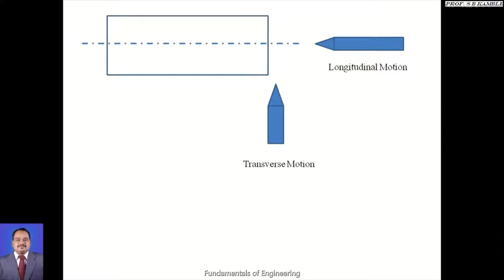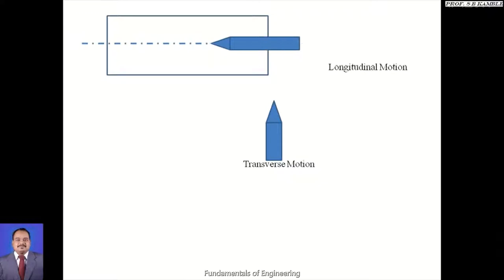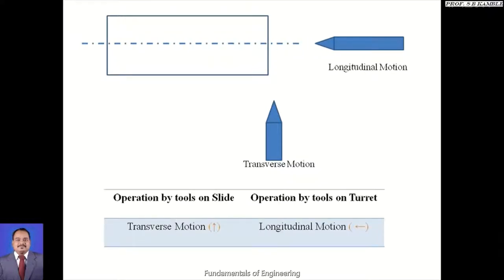Transverse motion is where the cutting edge of the tool is perpendicular to the workpiece axis. Longitudinal motion is where the cutting edge is parallel to the workpiece axis. Operations done by tools on the slide use transverse motion — perpendicular to the workpiece axis. Operations done by tools on the turret use longitudinal motion — the cutting edge is parallel to the workpiece axis, as shown by the arrows indicating perpendicular and parallel directions.